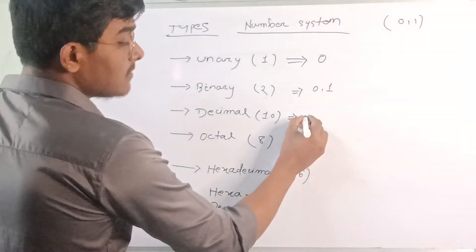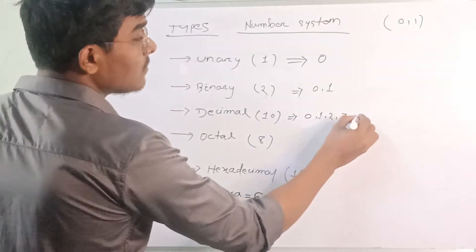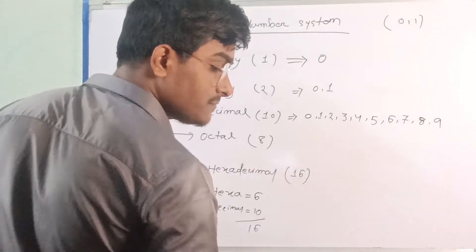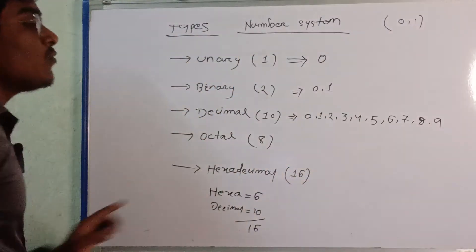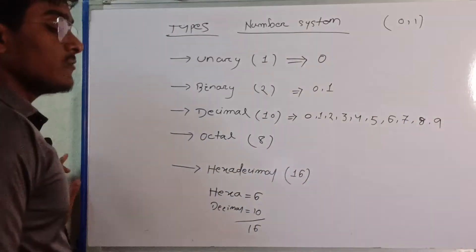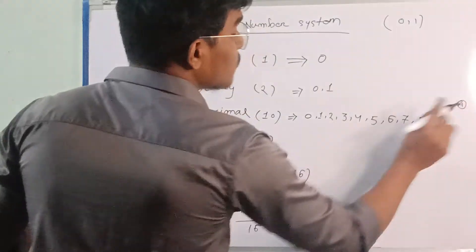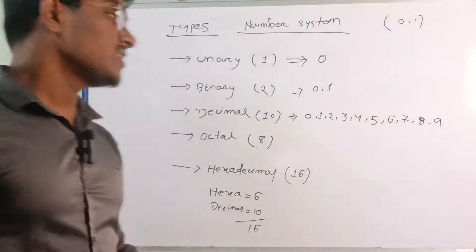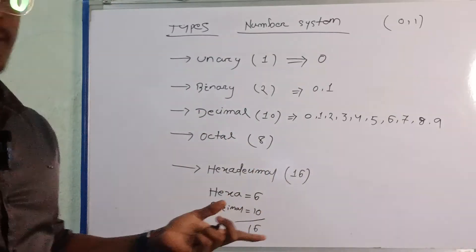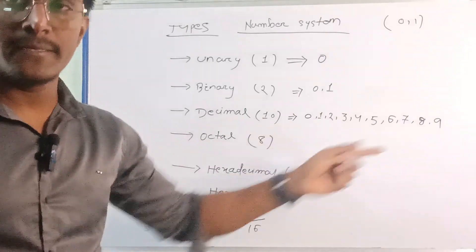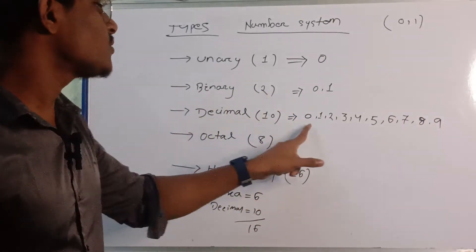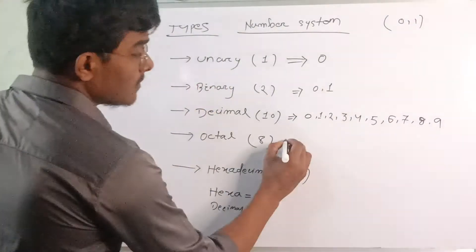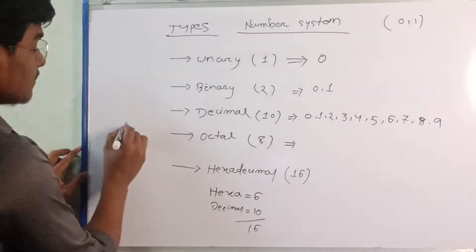After that, decimal — decimal uses 0, 1, 2, 3, 4, 5, 6, 7, 8, 9. So we consider 0 to 9. The highest digit is 9, which means 10 minus 1 equals 9. After that, octal — octal similarly: 8 minus 1 equals 7, so octal goes from 0 to 7.